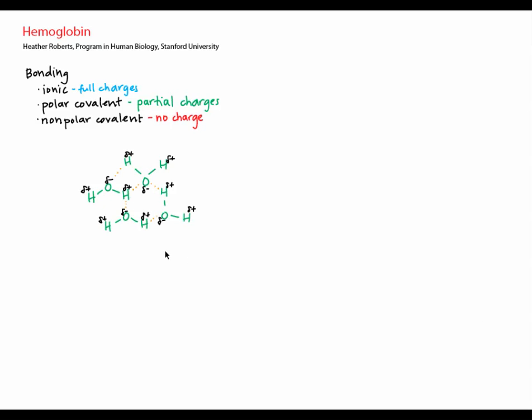Water molecules will orient themselves so that the partially positive hydrogens can interact with the partially negative oxygens of neighboring water molecules, forming hydrogen bonds. This is favorable because the opposite charges are allowed to come together, just like it's favorable for the two opposite magnets to come together.